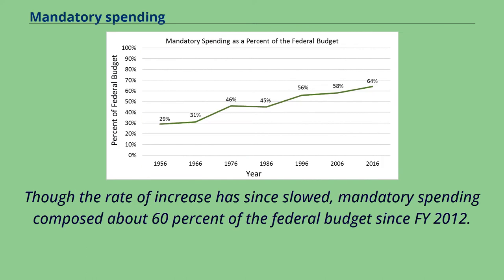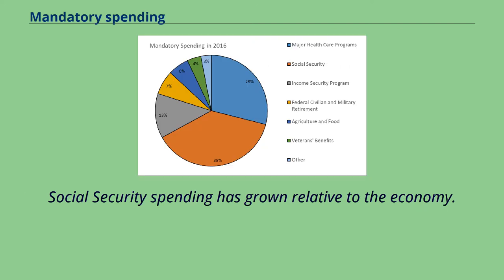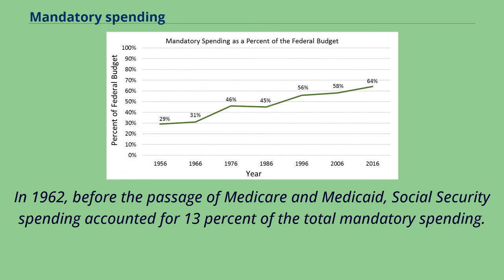Though the rate of increase has since slowed, mandatory spending has composed about 60% of the federal budget since FY 2012. Social Security spending has grown relative to the economy. In 1962, before the passage of Medicare and Medicaid, Social Security spending accounted for 13% of the total mandatory spending, which was about half of all mandatory spending.